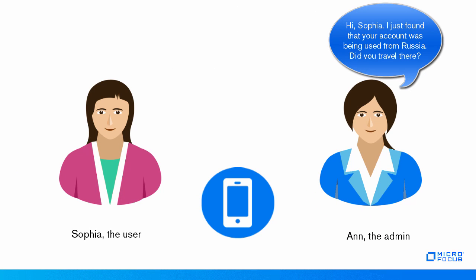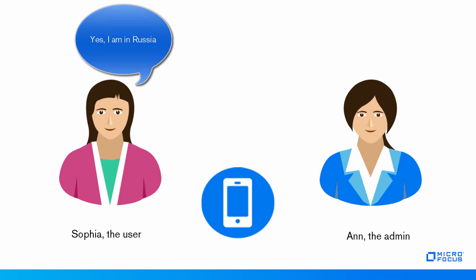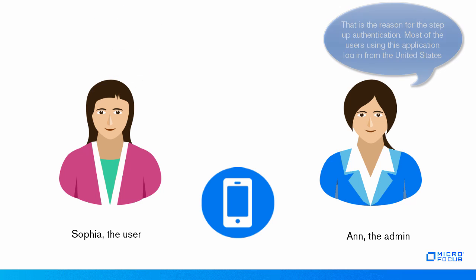Ann calls Sophia. Hi Sophia, I just found that your account was being used from Russia. Did you travel there? Yes, I am in Russia. That is the reason for the step-up authentication.